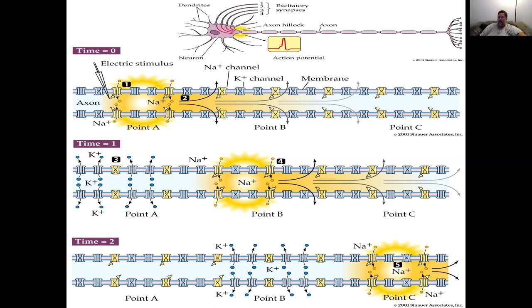Inside the cell body we call it a graded potential — it's a little different than an action potential in that it can be at different levels of being more positive or more negative in charge, while an action potential tends to be an all-or-nothing event where it reaches a certain plateau and replicates itself nearly exactly the same every time.